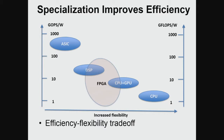What people have observed over time is that specialization in the function a system performs improves energy efficiency at the expense of flexibility. The most flexible systems we have are CPUs, because they can run any type of C code, but they achieve somewhere around one gigaflop per watt of energy efficiency.